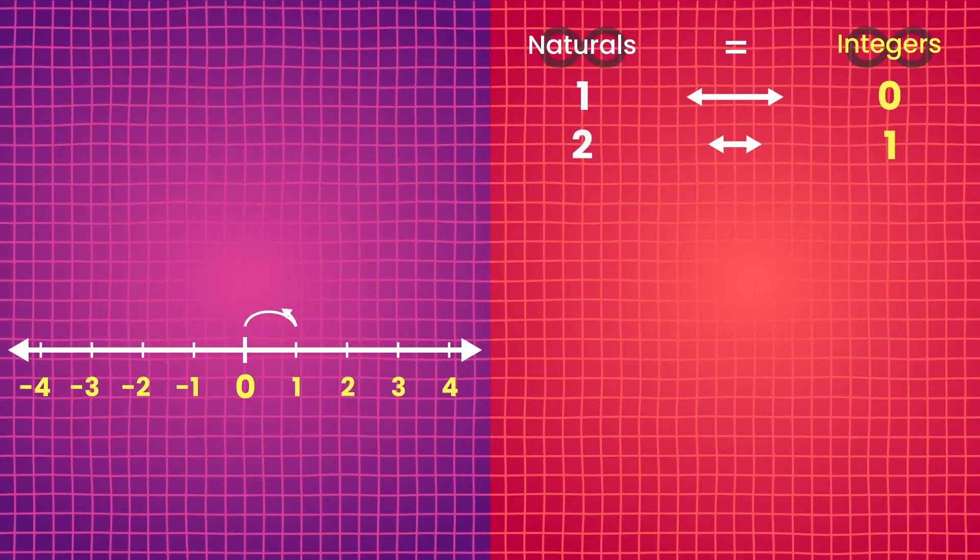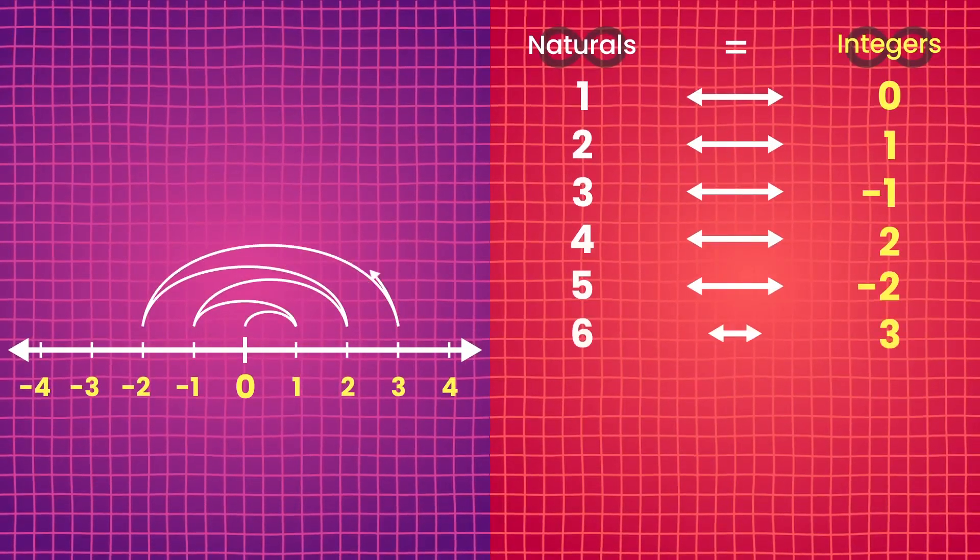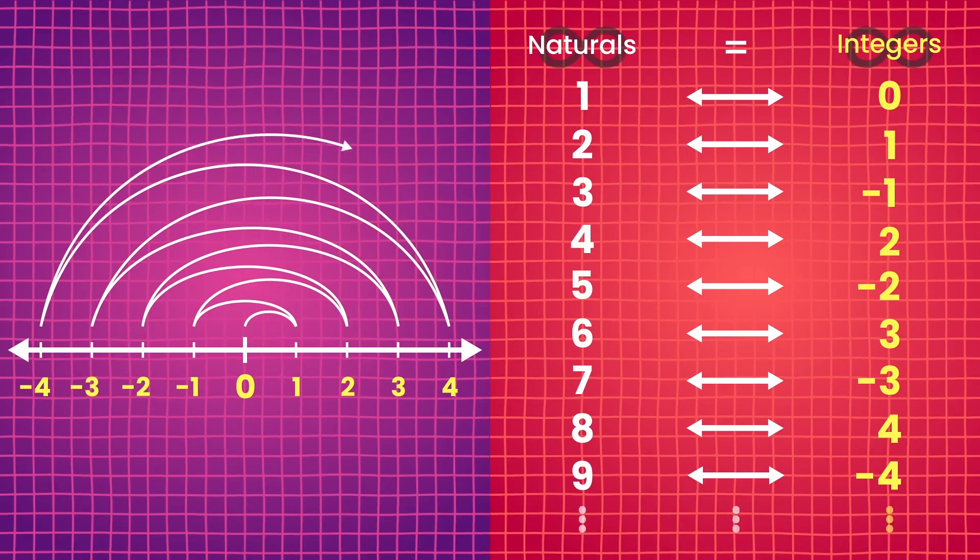In fact, with some clever pairing, you can even prove that the naturals are the same size as all the integers. When German mathematician Georg Cantor laid the groundwork for these results in the early 1870s, he wondered if there were any larger infinities out there that couldn't be paired with the naturals.